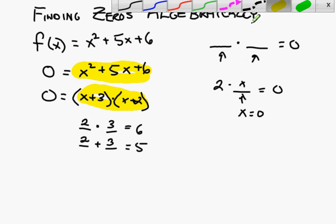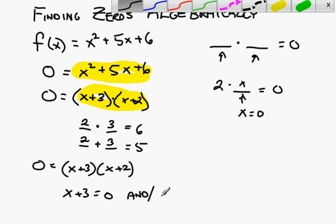Now, we're going to use the zero product rule to find out what the zeros are for this function. Here I have x plus three being multiplied by x plus two, and the answer is zero. The product is zero. So because of the zero product rule, then, I know that x plus three equals zero and or x plus two equals zero.